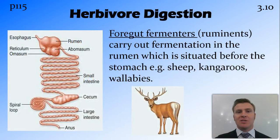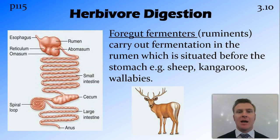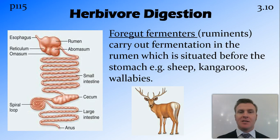There are two types of digestive systems that herbivores have. Foregut fermenters, or ruminants, carry out fermentation in the rumen. The rumen is situated before the stomach — basically the stomach is enlarged and broken up into separate chambers. In the rumen, the first and very large chamber, the anaerobic bacteria live, break down the food, and then the food goes into the true stomach before going into the intestine. Examples of ruminants are sheep, kangaroos, wallabies, cows, and deer.